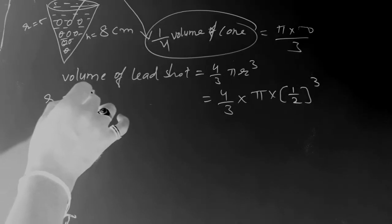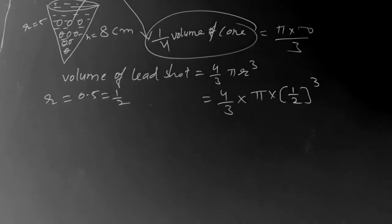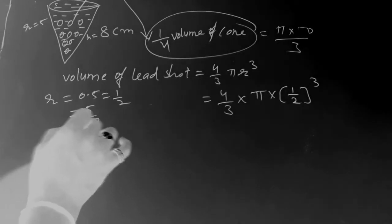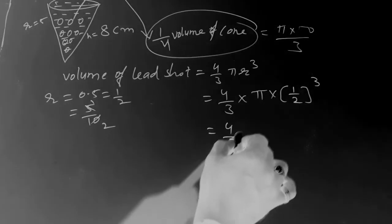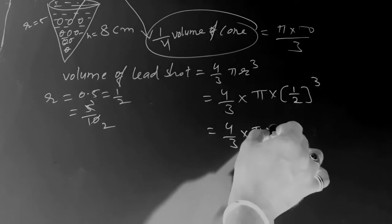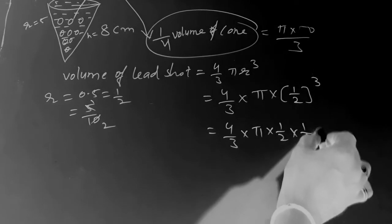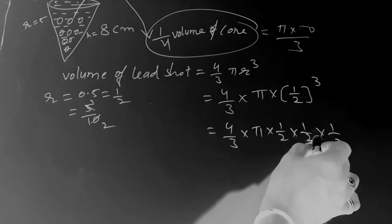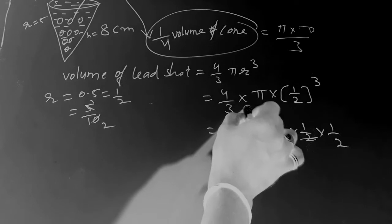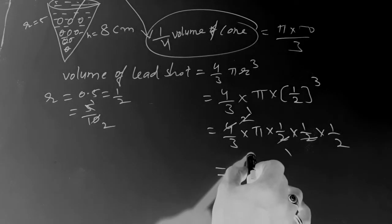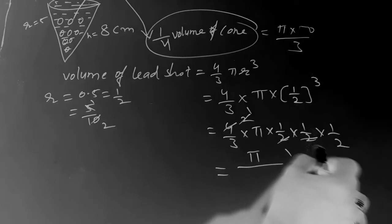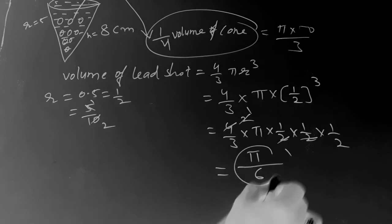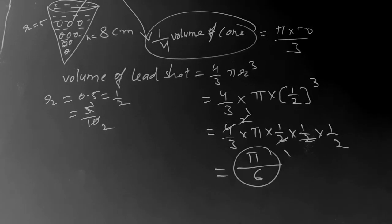Since r = 0.5 = 1/2, we get (1/2)³ = (1/2) × (1/2) × (1/2). Calculating: 4 in the numerator cancels with 2 three times in the denominator, leaving π in the numerator and 3 × 2 = 6 in the denominator. So the volume of one lead shot is π/6.